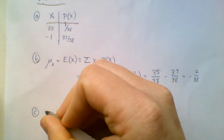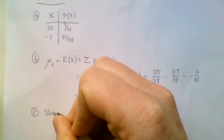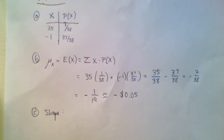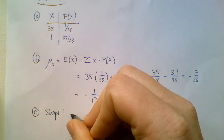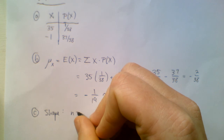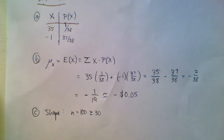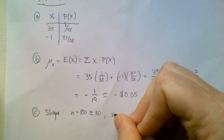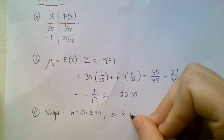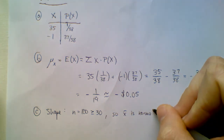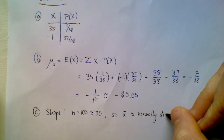As far as the shape is concerned, you know that if your sample size is at least 30, then x-bar is normally distributed. In this case, n is 100, which is definitely greater than or equal to 30. So x-bar is normally distributed — it's bell-shaped.